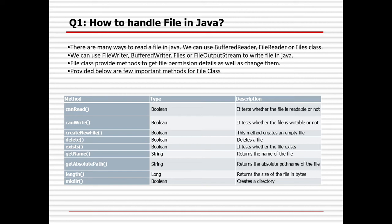Similarly, for writing data into any file, we can use FileWriter, BufferedWriter, Files, or FileOutputStream. The File class provides methods to get file permissions and read details as well as change them. I have listed down the methods available for the File class and the importance of each method.